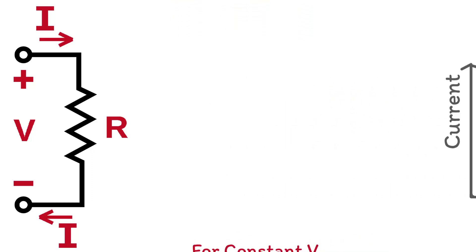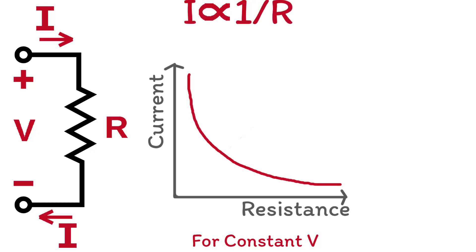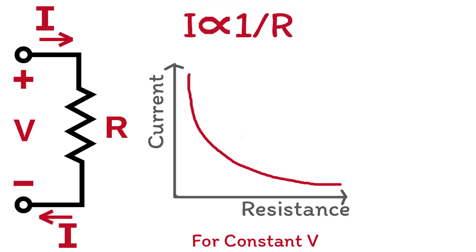For a constant voltage, if the resistance goes up the current will go down, and vice versa. So current and resistance have an inversely proportional relationship for a constant voltage.